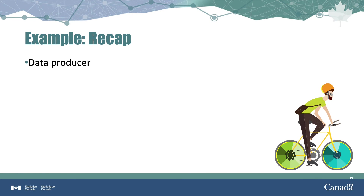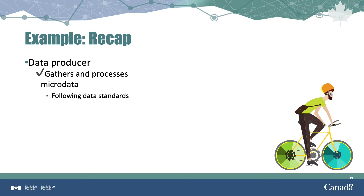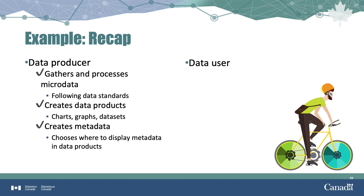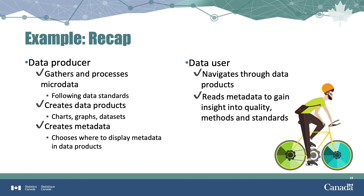Now let's review what we saw in the example. The data producer gathered the climate microdata, did some processing, applied data standards for dates and negative numbers, and used a standard classification for latitude and longitude. From the microdata, they produced data products — in this example, a chart, a graph, and a downloadable dataset. The data producer also created metadata describing everything they did and strategically chose where to display it in the data products, so it would be intuitive and transparent to the data user. The data user navigates through the data products and, from the metadata, learns about data quality, methods used, and data standards applied.